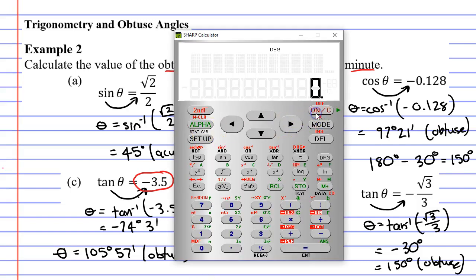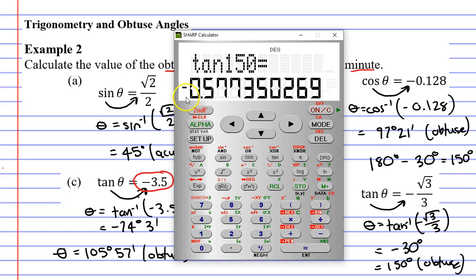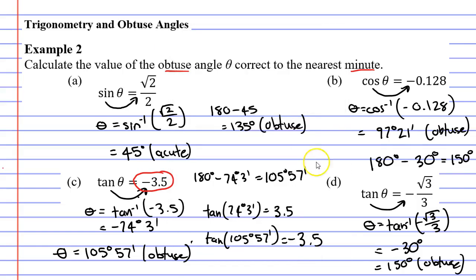I'm going to bring up my calculator, and I'm going to use my tan function, and I'm going to find tan of 150. Now, I get negative 0.577. So that's quite positive already. It gives me a negative solution, which is good. That's what I'm looking for. I'll give it a tick.